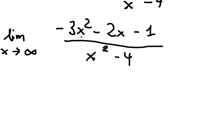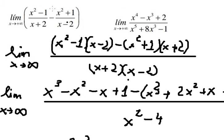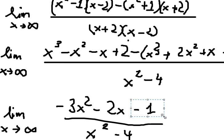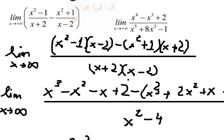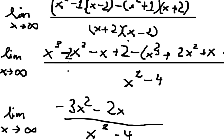After expanding and simplifying: x cubed minus x cubed cancels; we get negative x squared minus 2x squared giving negative 3x squared; then negative x minus 2x giving negative 3x — wait, let me correct: negative 1 minus 2 gives negative 3 for the constant. After dividing both sides by x squared, the 2 terms cancel, and we end up with negative 4.